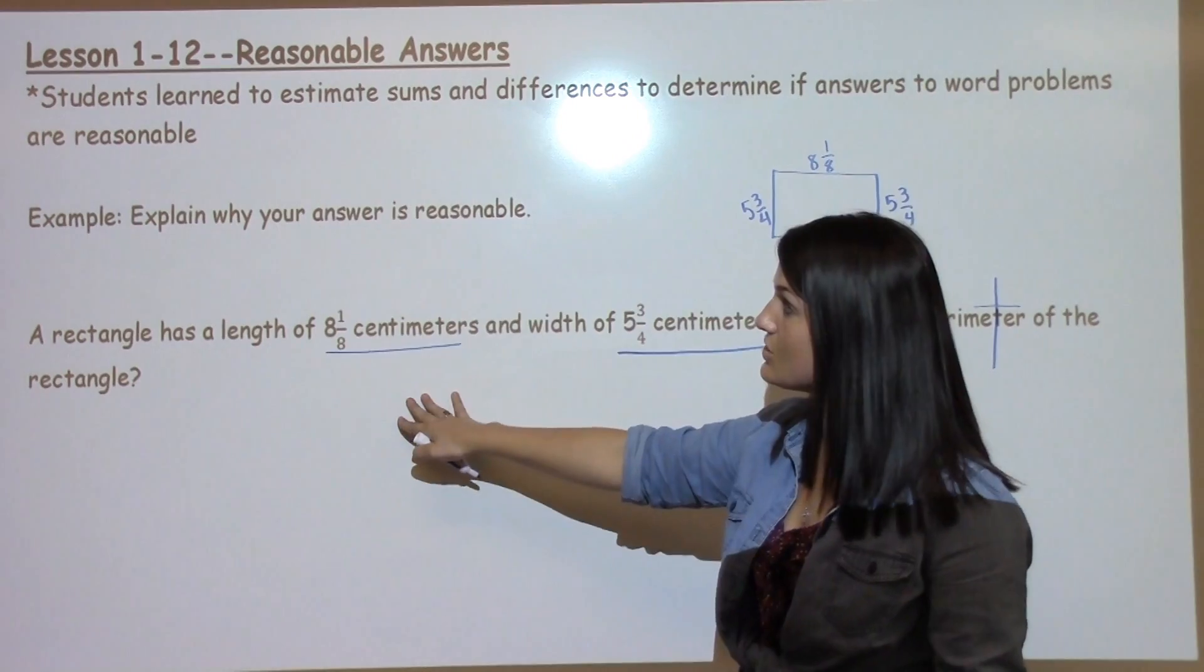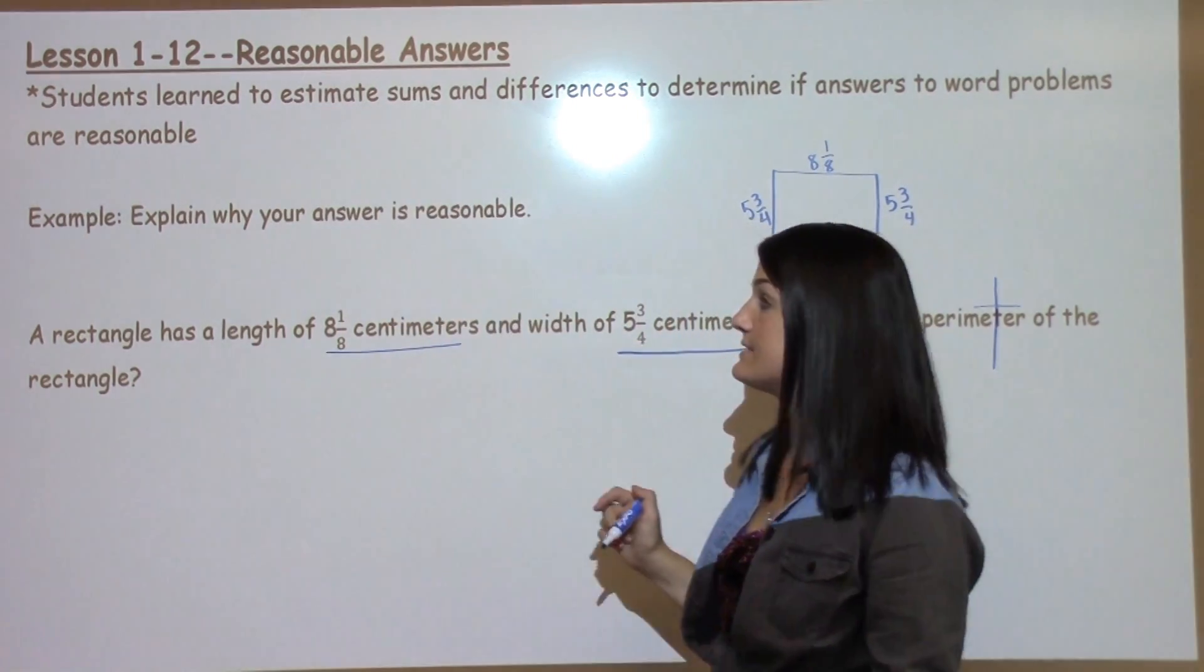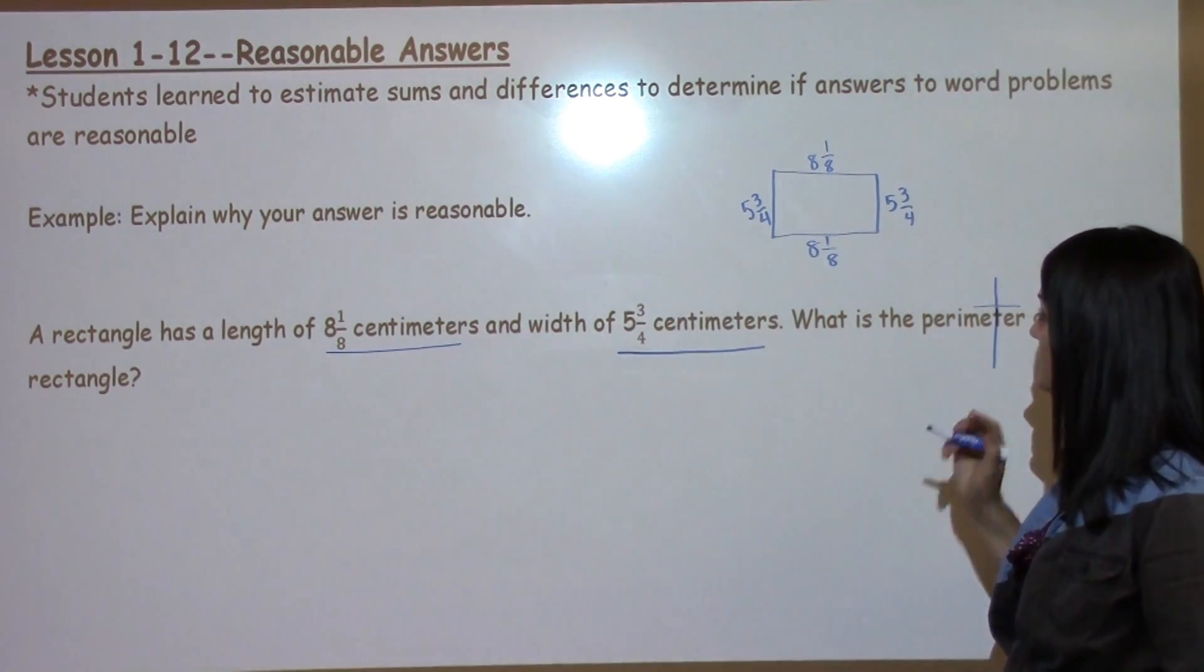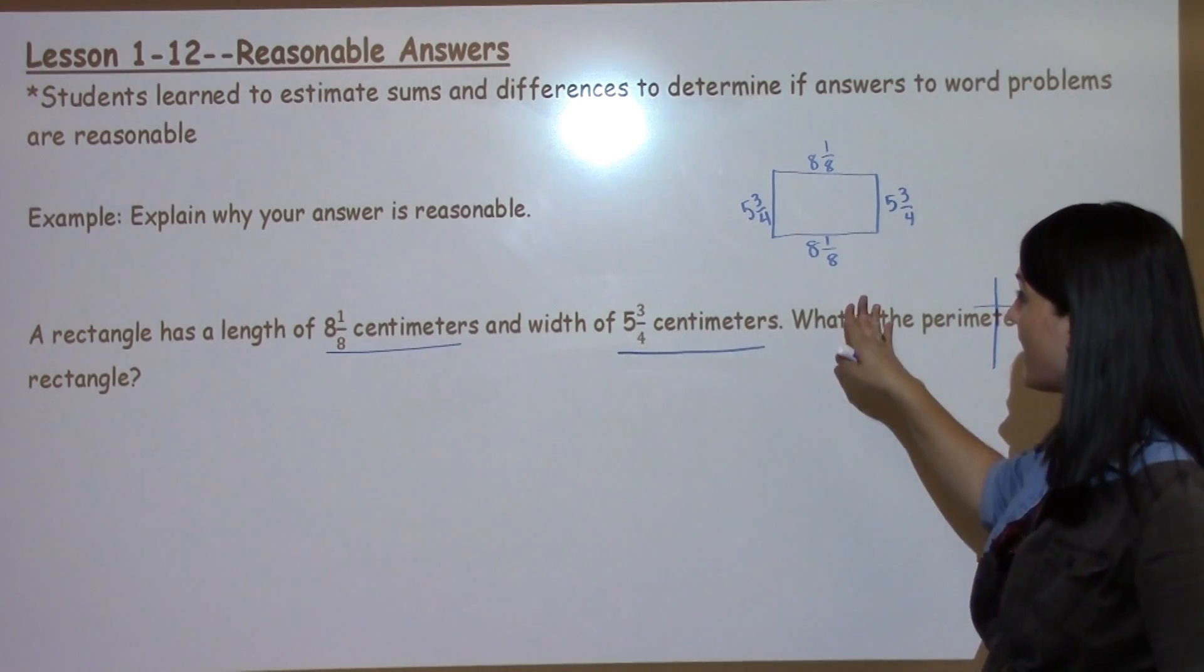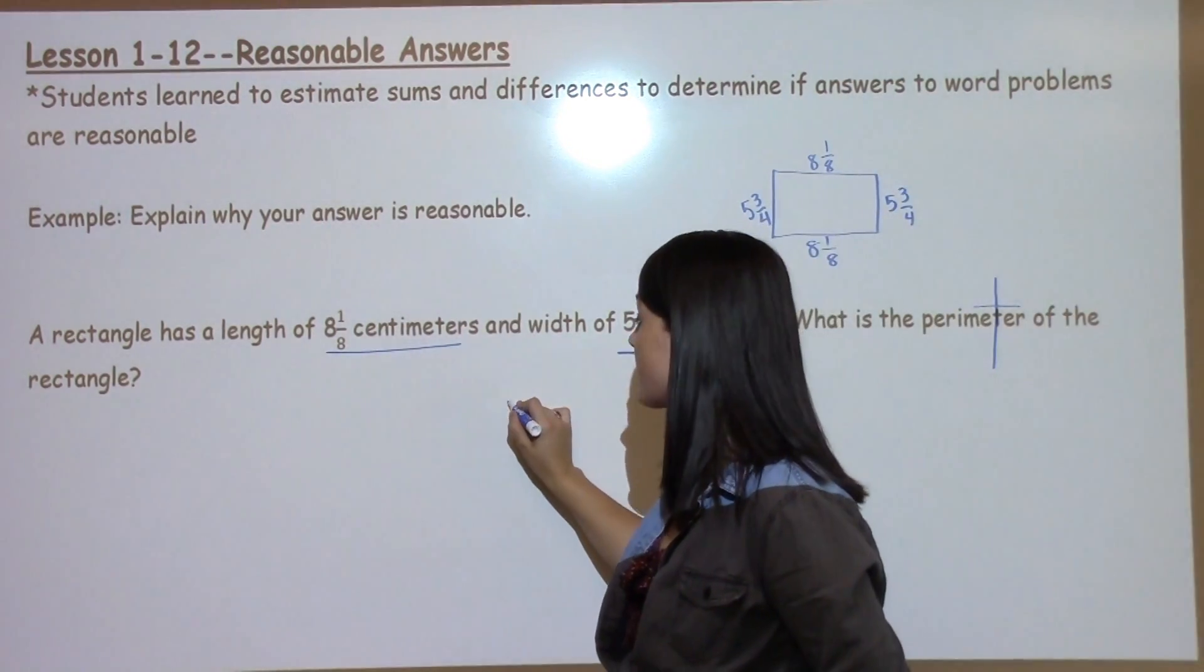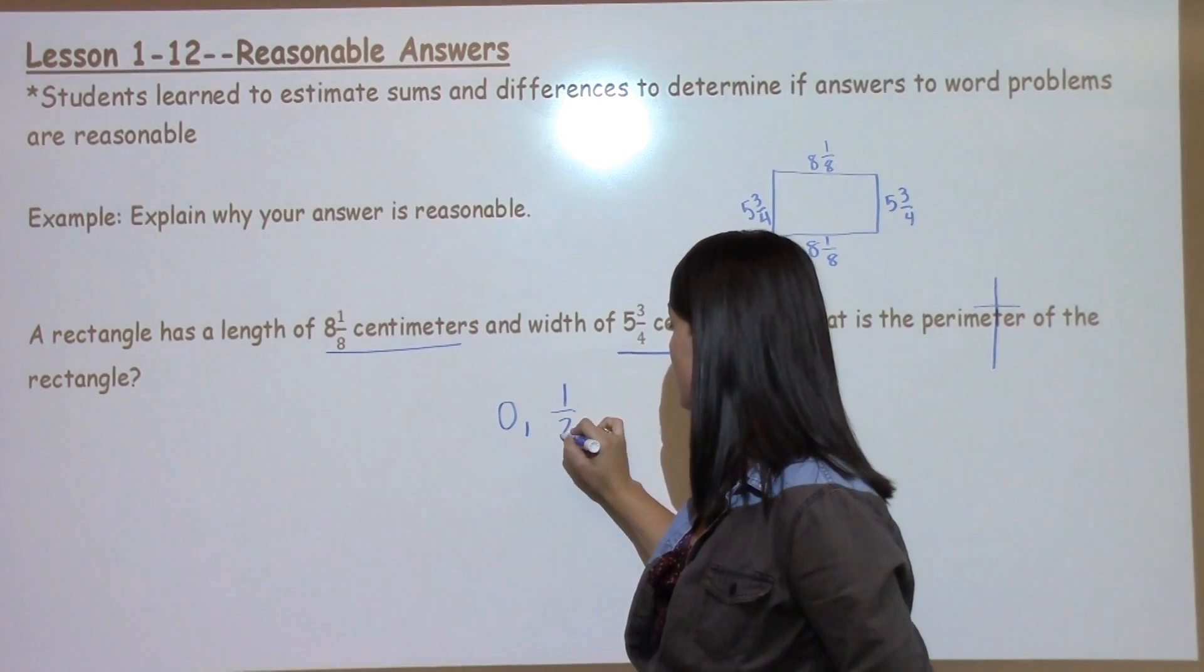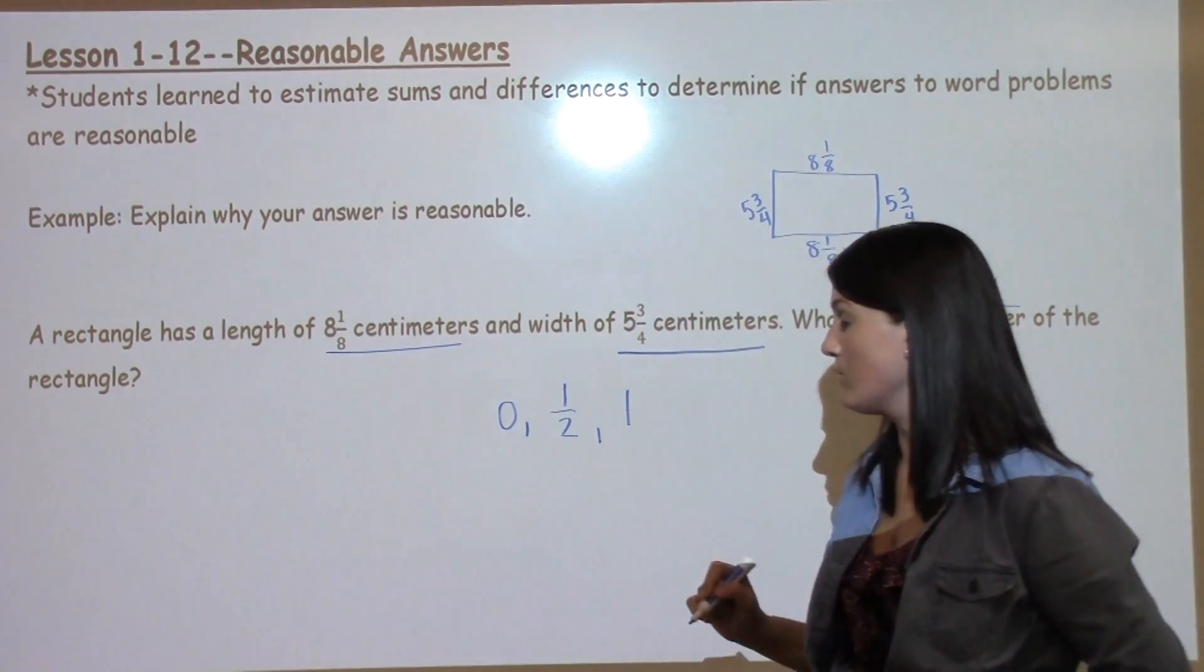The first thing I need to do is estimate my sum. Sum means to add, which is the same as perimeter. So I'm going to estimate my sum by rounding my fractions to either 0, 1/2, or 1 whole.